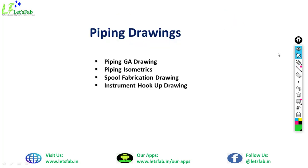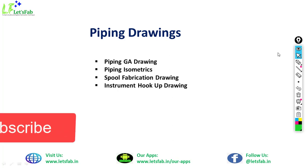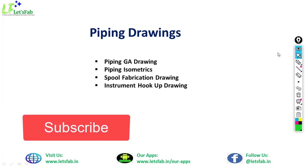Next we see piping drawings. In piping drawings, there are four major types: piping GA drawing, piping isometrics, spool fabrication drawing, and instrument hookup drawing. If you are working in a fabrication field, you must also have knowledge of piping drawings because most of the piping components are used in fabrication, and sometimes we also fabricate piping spools for vessel connection purposes. If you are a piping engineer, you already know this; but in our fabrication detail course, it is our responsibility to teach you all these drawings.